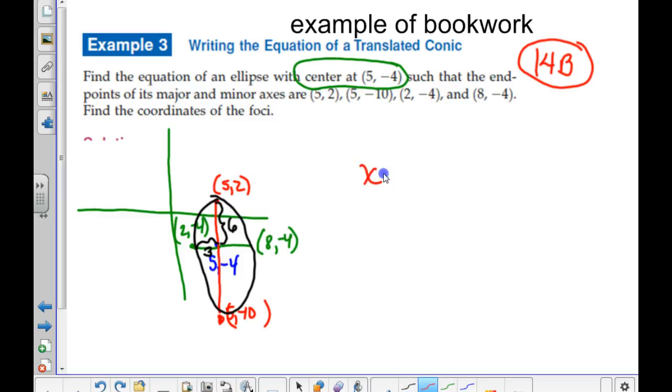Is anybody prepared to write the equation? Eric, tell me what you get. X minus 5 squared over 9 plus Y plus 4 squared over 36 equals 1. Nice finish.